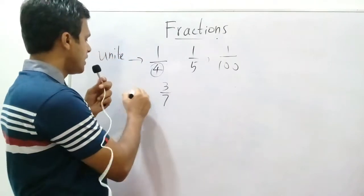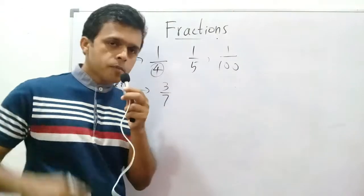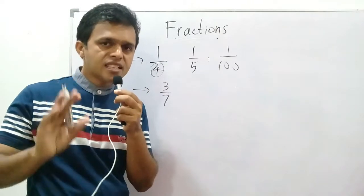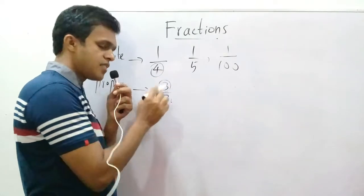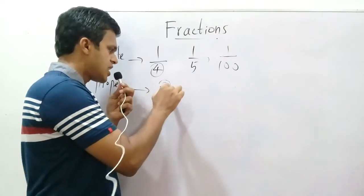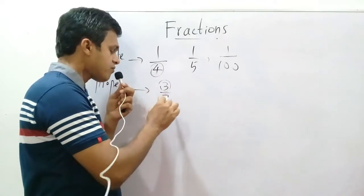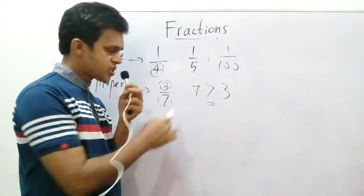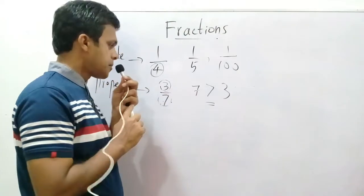These are proper fractions. What is a proper fraction? If the digit in the denominator — this is the denominator, this is the numerator — the digit in the denominator is seven and the digit in the numerator is three. Seven is greater than three.